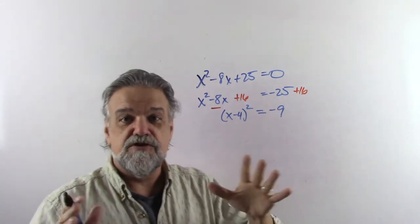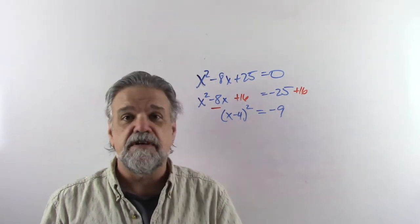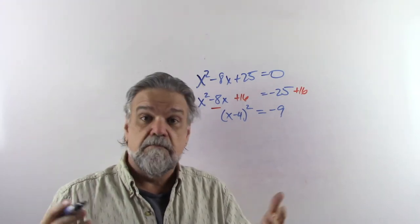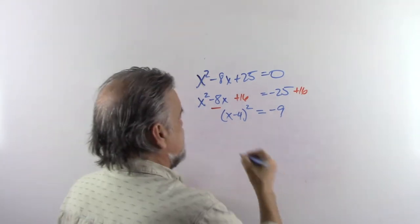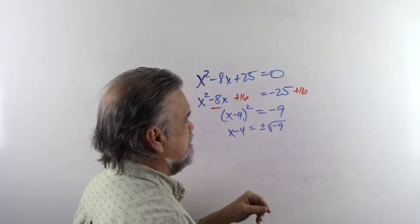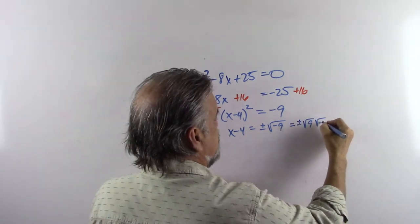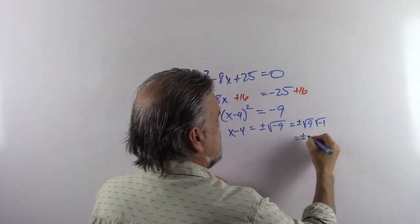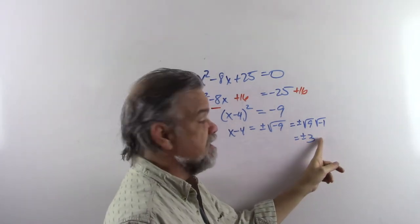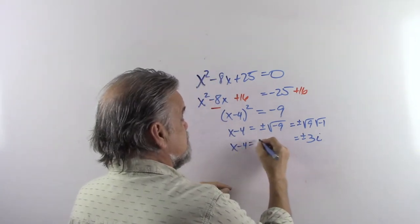At this point I'm very likely to say there's no solution, because there's no way you can square something and get a negative number. Well, someone a few hundred years ago said, yeah, but what if there were such a number? What would it be like? That means x minus 4 would be plus or minus the square root of negative 9, which is plus or minus the square root of 9 times the square root of negative 1 — plus or minus 3 times the square root of negative 1. They decided to call the square root of negative 1 simply i.